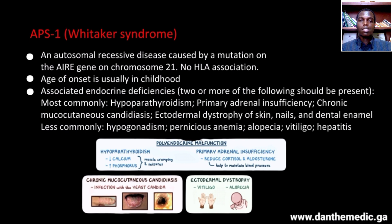Type 1 is associated with two or more of the following endocrine deficiencies. Most commonly there's hypoparathyroidism, primary adrenal insufficiency, chronic mucocutaneous candidiasis, and ectodermal dystrophy of the skin, nails, and dental enamel. Less commonly, there's hypogonadism, pernicious anemia, alopecia, vitiligo, and hepatitis.